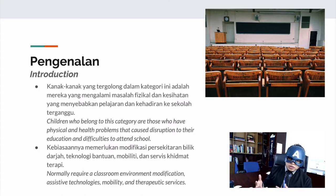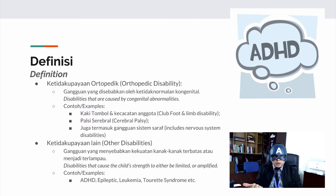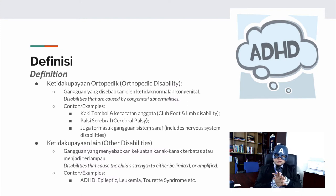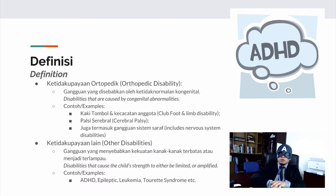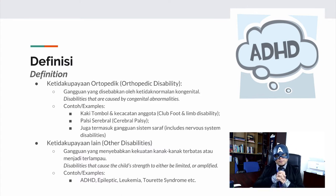They also require assistive technology, mobility support, and therapeutic services. In other physical and health disability, there are two categories: the first is orthopedic disability and the second is other disabilities. Orthopedic disability covers disabilities caused by congenital abnormalities — not limited to bodily abnormalities but also disruptions of the nervous system. Examples include clubfoot, limb disability, and cerebral palsy.